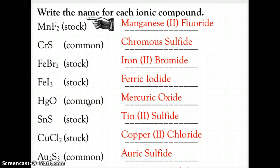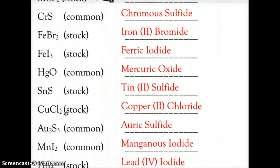Mercuric oxide is the mercury Hg²⁺ without the subscript two. Then we have tin(II) sulfide, copper(II) chloride, auric sulfide, manganese(II) iodide, and for lead, the Stock form with four iodides would be lead(IV) iodide. Hopefully this clarified how transition metals can have more than one ionic charge and how we use either naming system — common using -OUS or -IC, or Stock using the Roman numeral. Keep working on your chemistry!